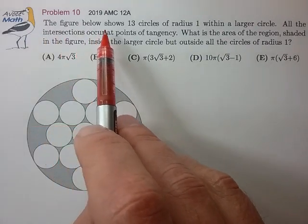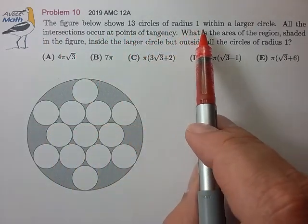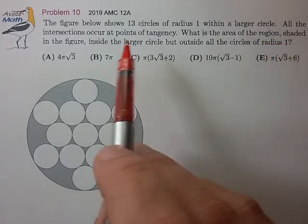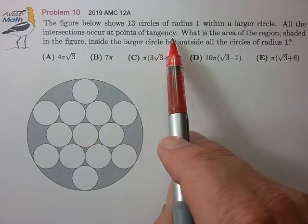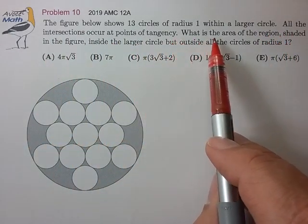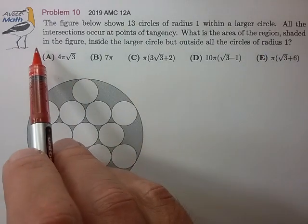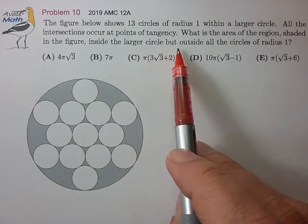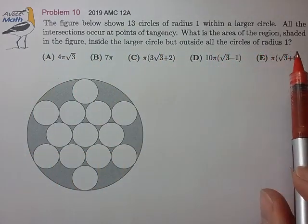The figure below shows 13 circles of radius 1 within a larger circle. All the intersections occur at points of tangency. What is the area of the region shaded in the figure — inside the larger circle but outside all the circles of radius 1?